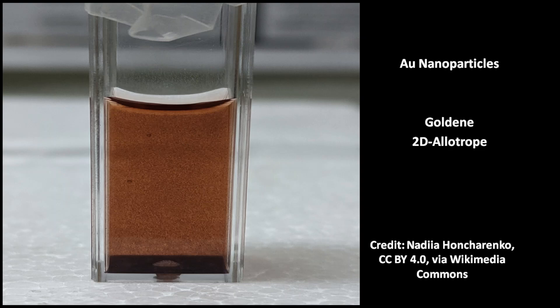Allotropes are different forms of the same chemical element. Goldene is the two-dimensional allotrope of gold. Nanoparticles of gold have been known for a long time. The goldene synthesis was a challenge because the gold atoms tend to form clusters.